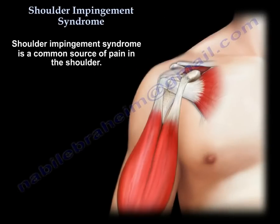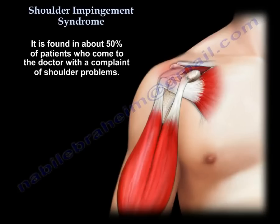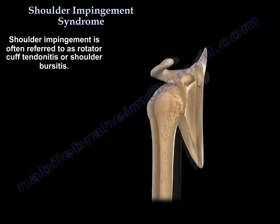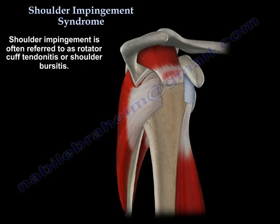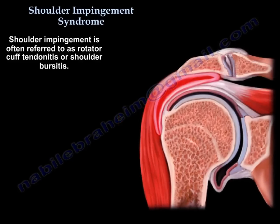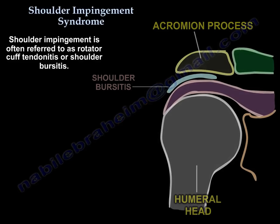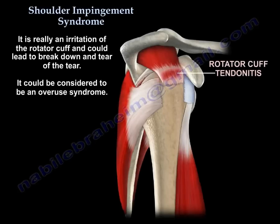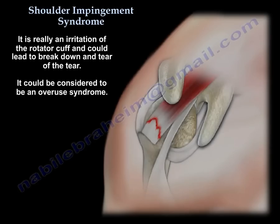Shoulder Impingement Syndrome is a common source of pain in the shoulder and you'll find it in about 50% of the patients coming to the doctor with a complaint of a shoulder problem. Sometimes we call it cuff tendinitis or shoulder bursitis. The patients are more familiar with shoulder bursitis, so we use that term. It's really an irritation of the rotator cuff and it can lead to breakdown and tear of the tendon. It could be considered an overuse syndrome.